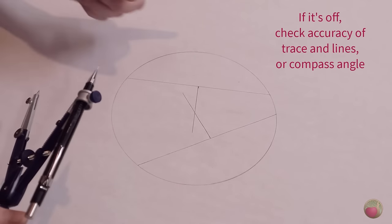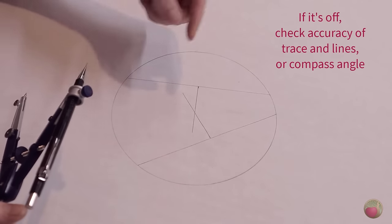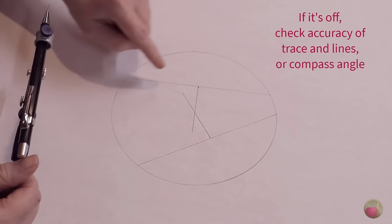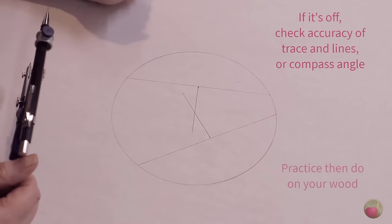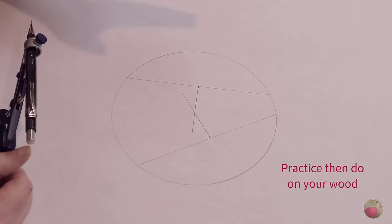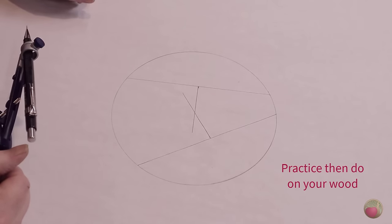Now if it's off a little bit, either your edge of your pencil was touching what you traced, your compass may be off, or it's the accuracy of drawing your line. So practice a little bit, get it perfect, and transfer that technique to the wood.